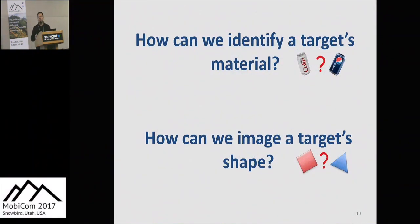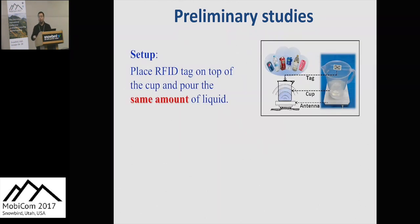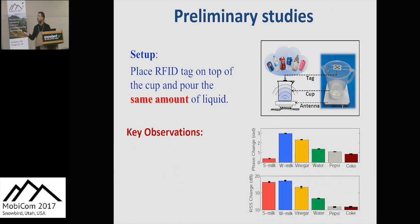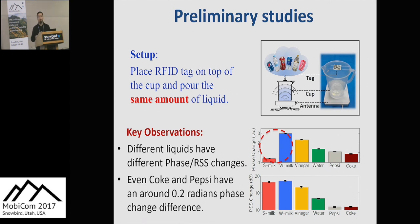In the rest of this talk, I will answer these two questions. First, how can we identify a target's material? To do so, we conduct a benchmark experiment. We pour different liquids such as water, vinegar, and beer into a cup and measure the phase and RSS changes when the signal penetrates through the liquid. We have two observations: first, different liquids have quite different phase and RSS changes. For example, for very similar liquids such as Coke and Pepsi, we can still see a clear phase change difference.